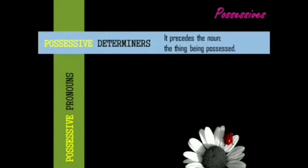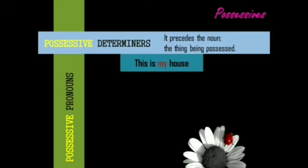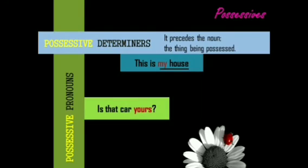'This is my house' — the house is possessed by me. 'Is that car yours?' — here 'yours' is a possessive pronoun. If you are asking the question 'is that car yours,' it is a possessive pronoun. Does the car belong to you?